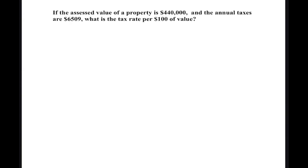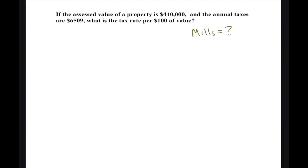Problem 4 is another tax problem but different from mills. If the assessed value of a property is $440,000 and the annual taxes are $6,509, what is the tax rate per $100? We just did mills; this isn't a mills problem. In the US you have two options: mills or per-$100. We did mills which go off thousands; now we're doing per $100.